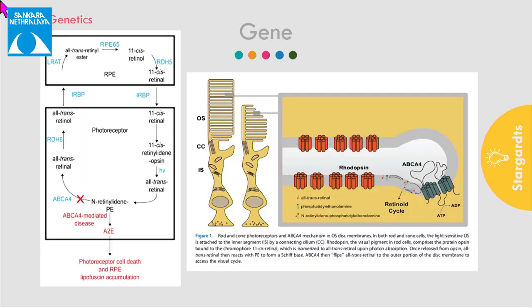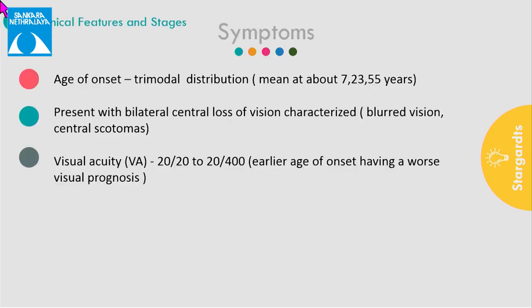The mutation results in formation of A2E, which is stored in the RPE lysosomes, resulting in subsequent RPE atrophy followed by photoreceptor cell death. Generally, the patient presents with bilateral loss of central vision, and the visual acuity depends on the age of onset. The earlier the onset, the more severe the visual impairment and poorer the prognosis compared to a later age of onset.